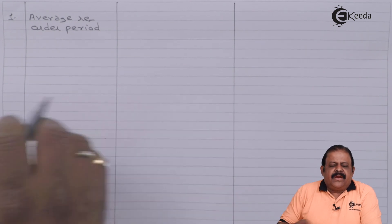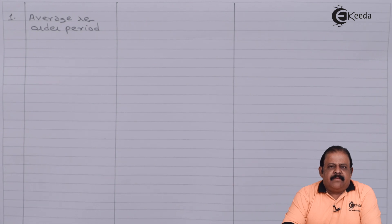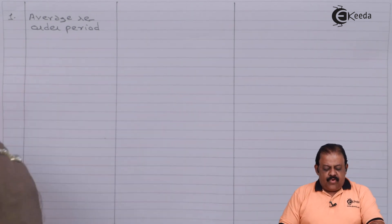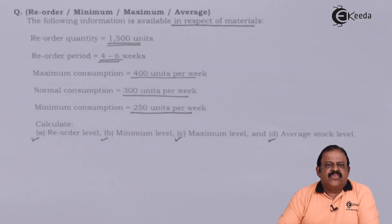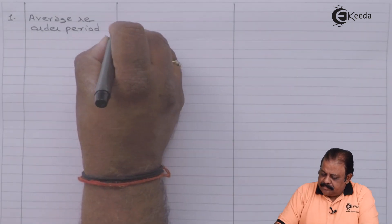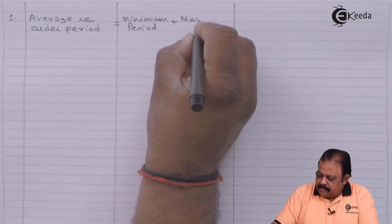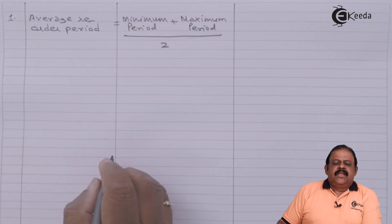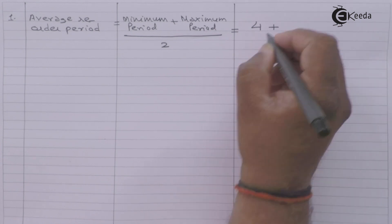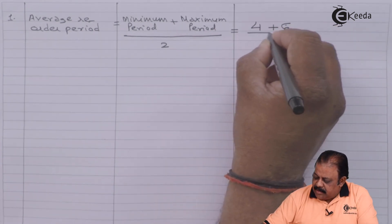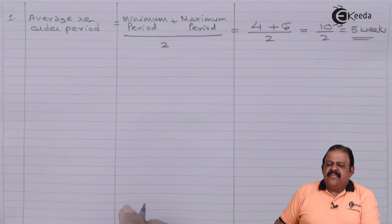Let us first calculate the average reorder period. When we place an order to a supplier, the supplier takes some time to deliver the materials. In this case, the supplier takes a minimum period of four weeks and a maximum period of six weeks. We take the average: minimum period plus maximum period divided by two — four plus six divided by two — giving us five weeks.